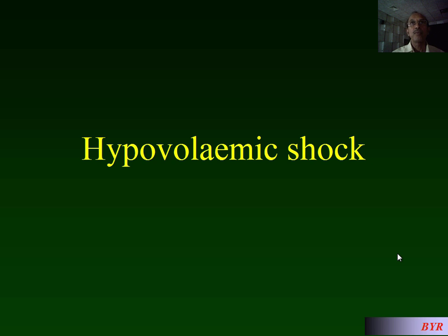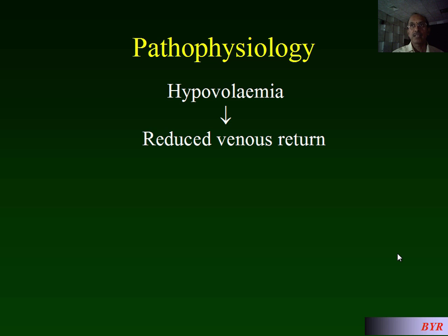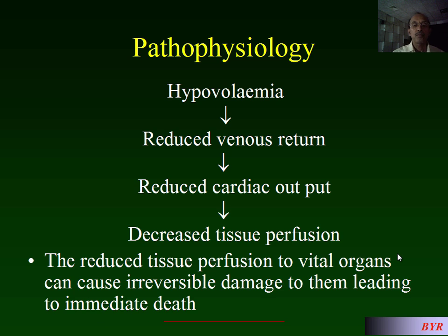Let us study about hypovolemic shock. Hypovolemia produces reduced venous return, which in turn causes reduced cardiac output and decreased tissue perfusion. The reduced tissue perfusion to vital organs can cause irreversible damage to them, leading to immediate death.